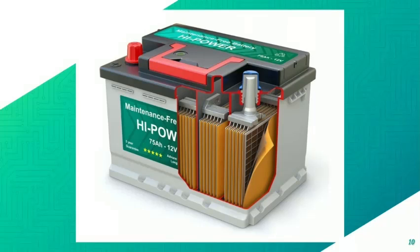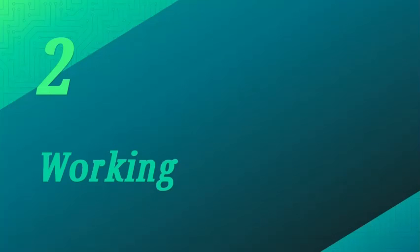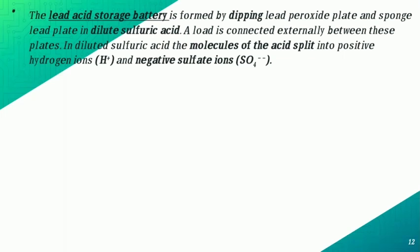This is a 3D diagram of a lead-acid battery where we can see the terminals, positive plates, and negative plates. The lead-acid storage battery is formed by dipping the lead peroxide plate and sponge lead plate in dilute sulfuric acid. A load is connected externally between these plates. In the dilute sulfuric acid, the molecules of the acid split into positive hydrogen ions (H⁺) and negative sulfate ions (SO₄²⁻).